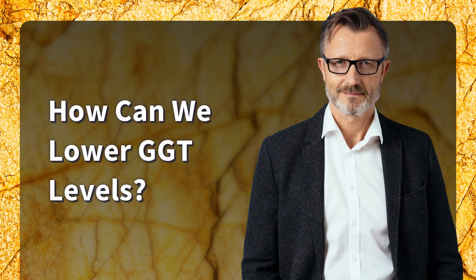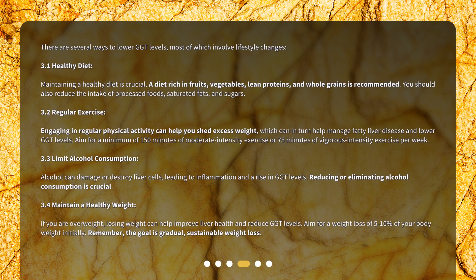There are several ways to lower GGT levels, most of which involve lifestyle changes. First, maintaining a healthy diet is crucial. A diet rich in fruits, vegetables, lean proteins, and whole grains is recommended. You should also reduce the intake of processed foods, saturated fats, and sugars.